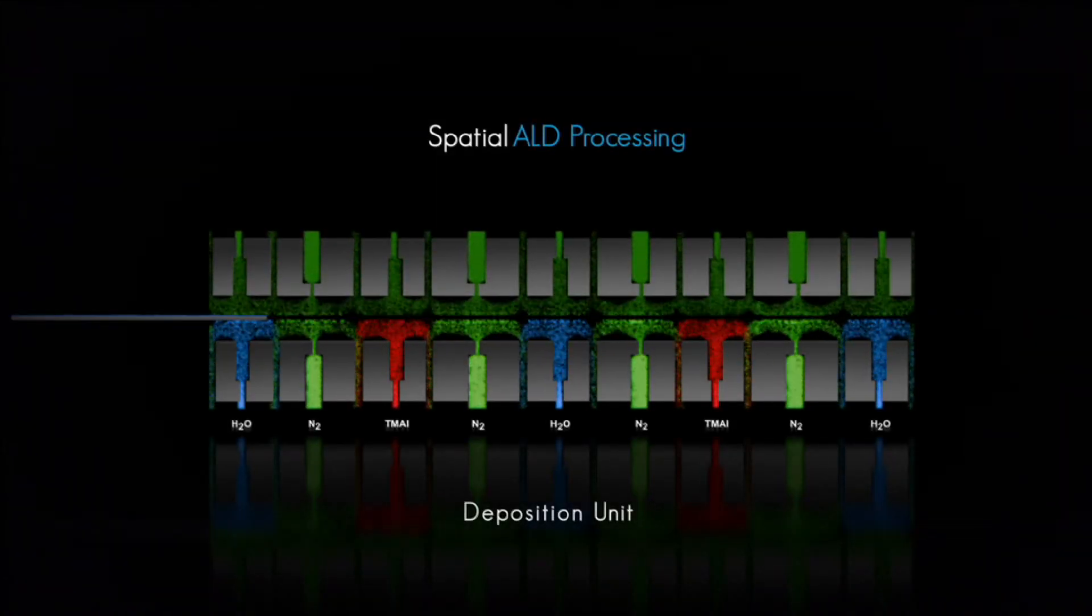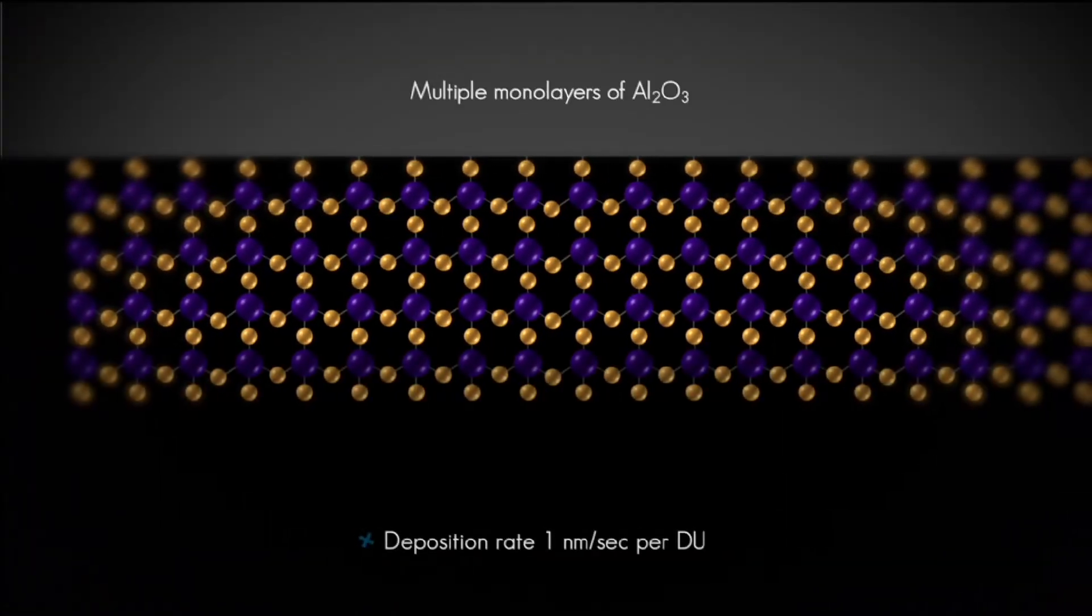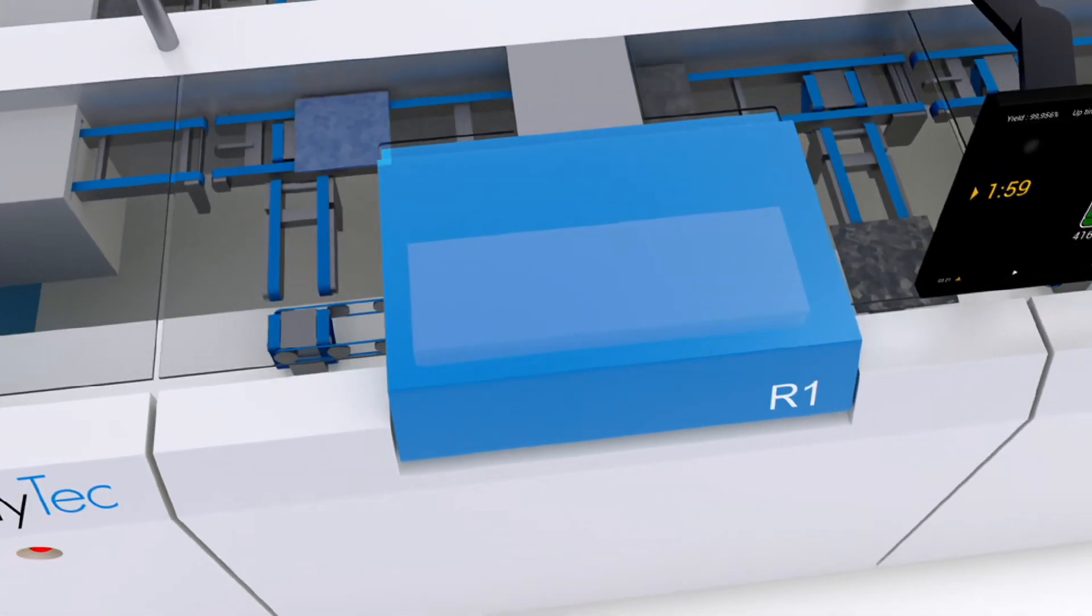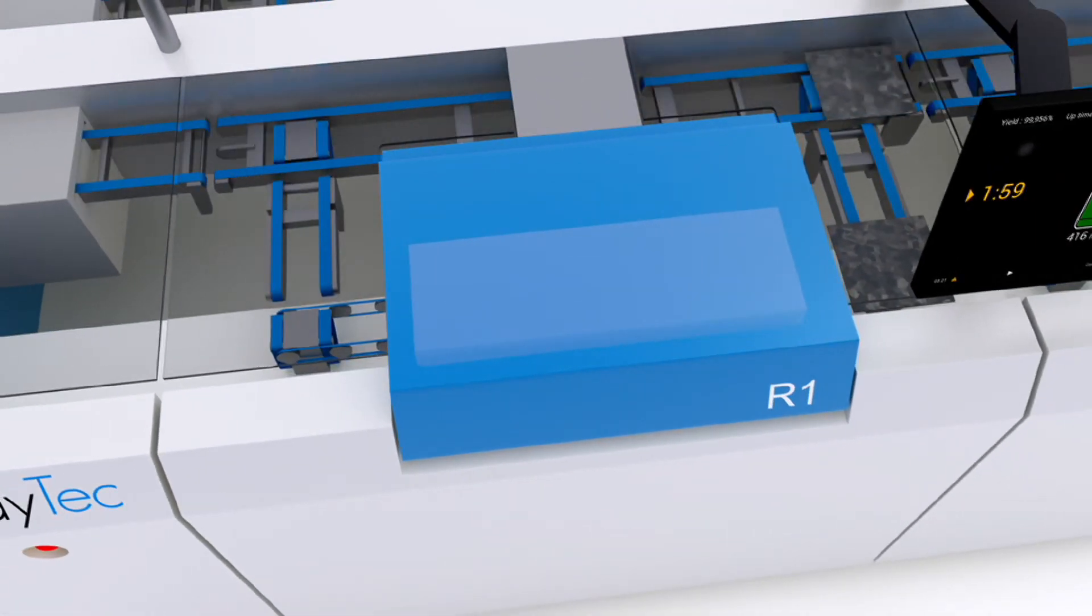The process is repeated to produce the desired number of atomic layers. System flexibility allows the user to easily vary the layer thickness without hardware modification. When the predefined layer thickness is achieved, the wafer is cooled down and transported by the main conveyor to the next process step.